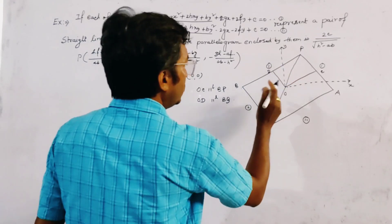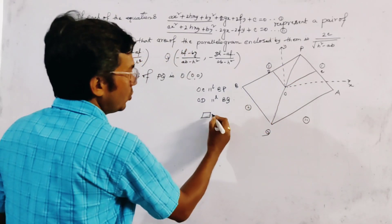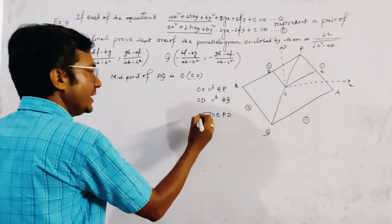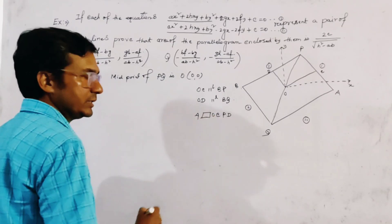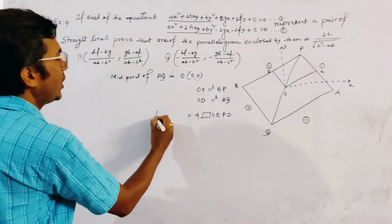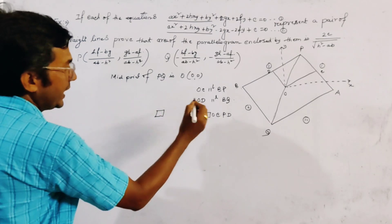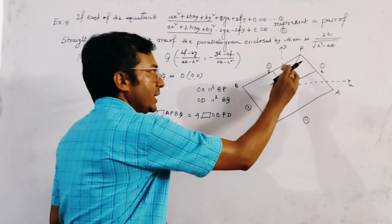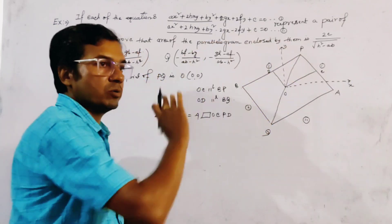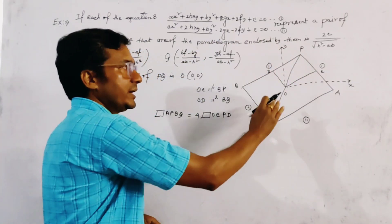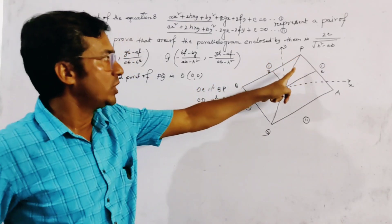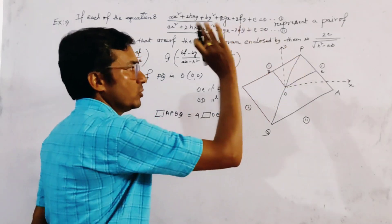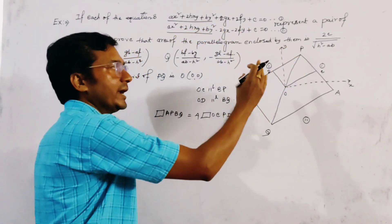If we find the area of the smaller parallelogram OCPD and then multiply it by 4, this gives the area of the full parallelogram APBQ. Geometrically, OCPD is one-fourth of the total parallelogram. So we find the area of OCPD and multiply by 4 to get the required result.